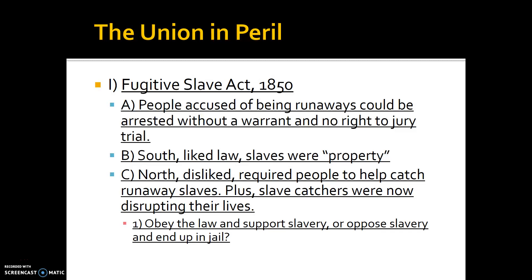The first thing: the Fugitive Slave Act of 1850. This is part of the Compromise of 1850 that we discussed in the earlier video. People accused of being a runaway slave could be arrested without a warrant and had no right to a trial by jury. Southern states liked this because slaves were considered property — if someone took your property, you should just get it returned. A piece of property doesn't need a trial. The North disliked this because the law required them to help catch runaway slaves.